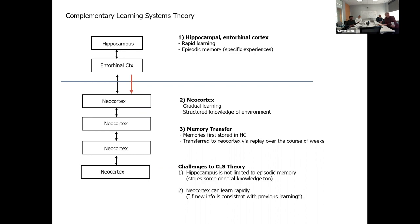Problems with this theory that they discuss in the paper include that the hippocampus does a lot more than just episodic memory — it has all kinds of memory, including things that seem to be more general knowledge. There's also evidence that the neocortex can learn rapidly under certain conditions — specifically, as quoted from the paper, 'if the new information is consistent with previous learning.' What they basically wrote is: here's their 1995 theory, and here are the things contrary to it. They modified the theory so that the cortex can learn rapidly and the hippocampus can do other things too — they just accepted these changes while maintaining the core idea.